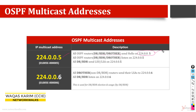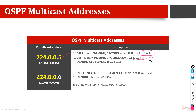All OSPF routers send and receive — meaning they are listening — on 224.0.0.5. With multicast, only specific routers or interfaces that have enabled that address will receive traffic. This is the difference between multicast and broadcast: with broadcast, everyone has to receive; there is no choice. So all types of OSPF routers listen and send on .5.